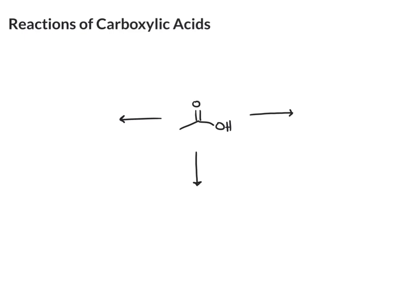We're going to spend a good deal of time looking at the various reactions of carboxylic acids, so I just want to introduce you to a few of the main ways that carboxylic acids react. The first is probably the simplest, and that's a reaction with base. When you react a carboxylic acid with base, it deprotonates it to give you the conjugate base, which is referred to as the carboxylate anion.